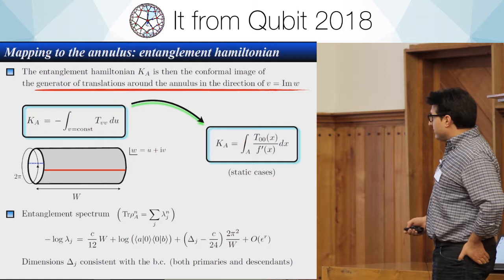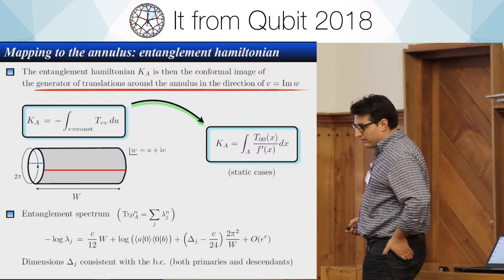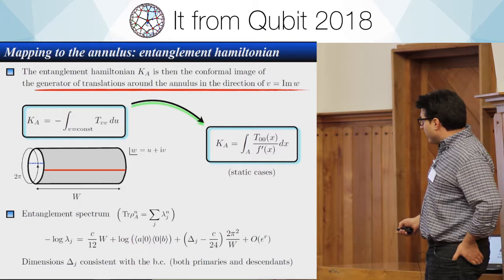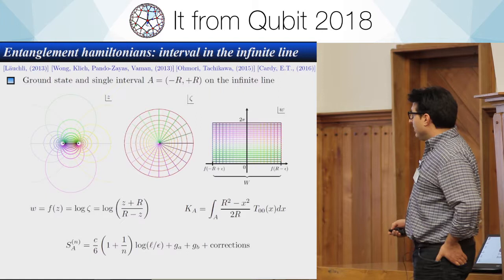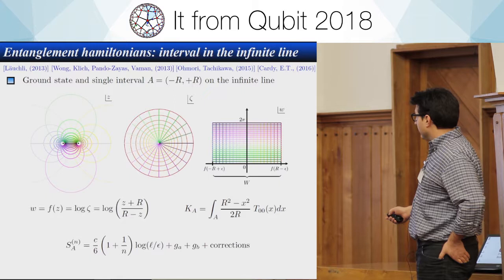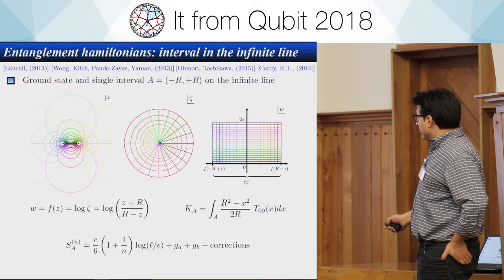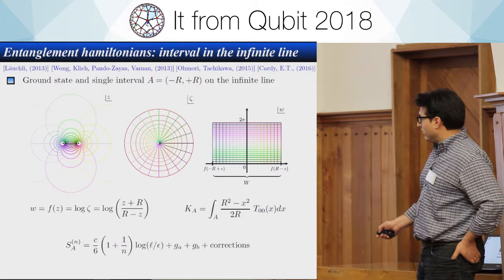Another result from this analysis is that one can write the entanglement spectrum. The entanglement spectrum eigenvalues λ_j can be expanded in a specific form, valid when W is very large. The simplest example is a single interval on the infinite line, with the conformal map f sending this configuration to the annulus. The width W equals twice log(L/ε), giving the famous expression found by Calabrese-Cardy-Lefevre.